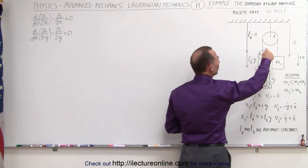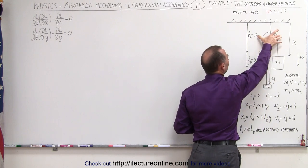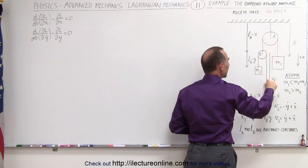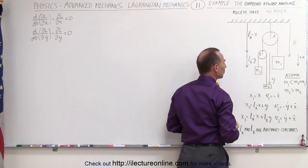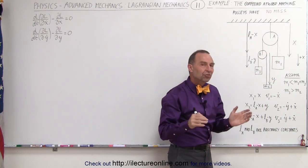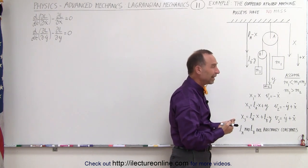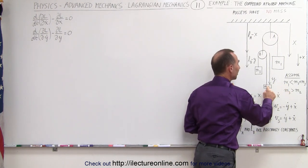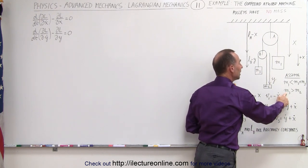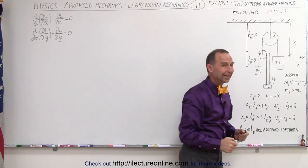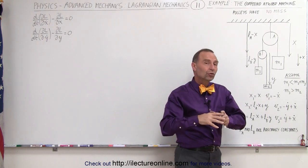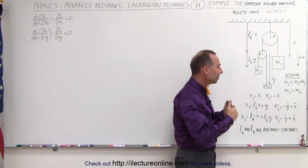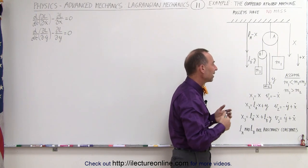We have two pulleys — pulley A and pulley B. On pulley A we have mass M1. On the other side we have pulley B, which contains two masses M2 and M3. We're going to assume that M1 has less mass than M2 and M3 combined, and that M3 is larger than M2. It doesn't have to be that way — we can use any combination — but this way we can make sense of the results later.